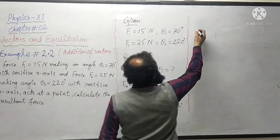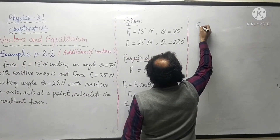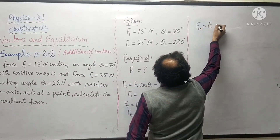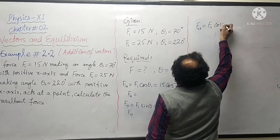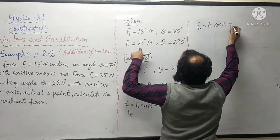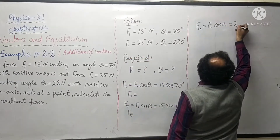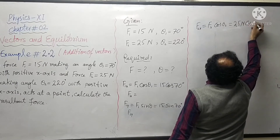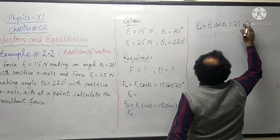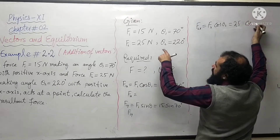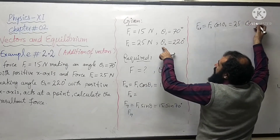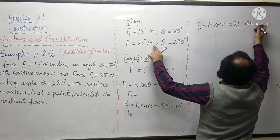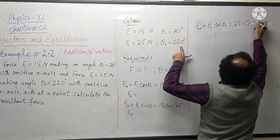Similarly, for the second vector, the x-component is F2 cos theta-2. F2 is 25 newtons at 220 degrees, so we have 25 newtons times cos 220 degrees for F2x.